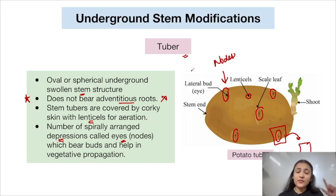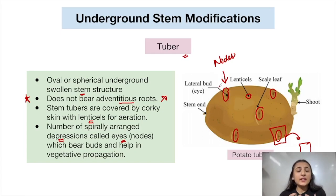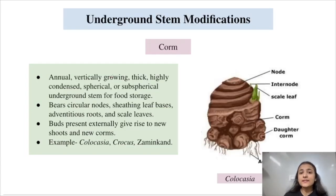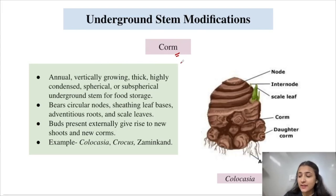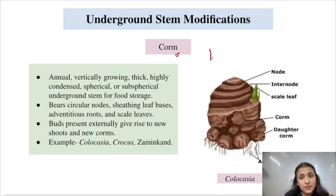Now let us look at corms. A corm is an annual vertically growing underground stem modification. Note that rhizomes grow horizontally whereas corms grow vertically — a major differentiating factor. It is a thick, highly condensed, spherical or sub-spherical stem responsible for food storage. Annual means it completes its life cycle in a single growing season.